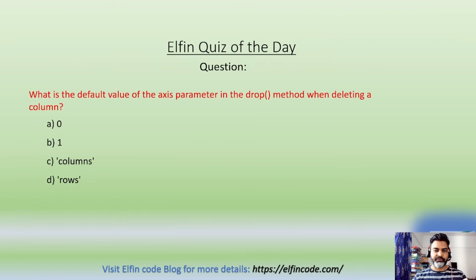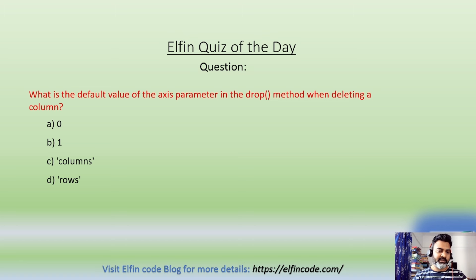Elfin quiz of the day: What is the default value of the axis parameter in the drop method when deleting a column? A: zero, B: one, C: columns, D: rows. Please provide your answer in the comment section.